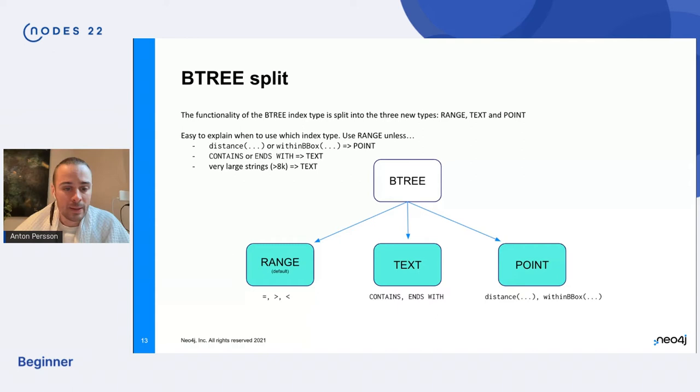But here you have a picture of how I think of it as the Btree being split out into its functional component. And in terms of choosing what index type to use, my recommendation would be that range is the one that you want unless any of those three conditions apply. If you use distance or within bounding box, then you want to use the point index. Even if you have point values, but you only do equality search on it, range will do that perfectly fine. You don't need a point index to support equality, just for distance and bounding box. Or if you have contains and ends with predicates, then you want to use text.